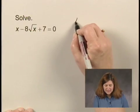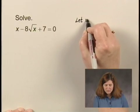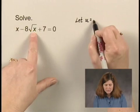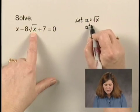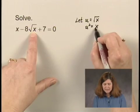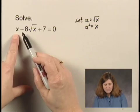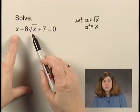then if I let u equal the square root of x, and u squared equal the square of the square root of x, which is x, I would end up with a u squared and a u term.